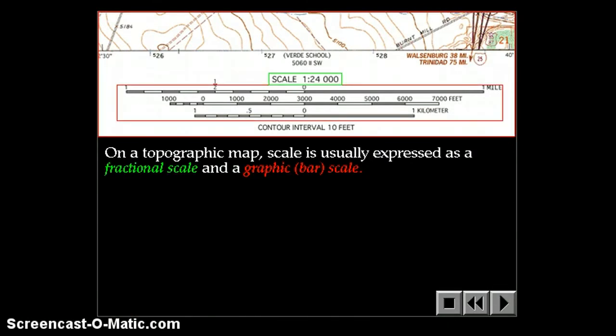On a topographic map, scale is usually expressed as a fractional scale and as a graphic bar scale. The fractional scale is circled in green right here, scale equals 1 to 24,000. And the graphic scale is inside the red box here, and it's graphic. It's a picture showing you what distance is equivalent to a certain number of feet or miles or kilometers.